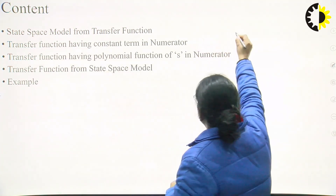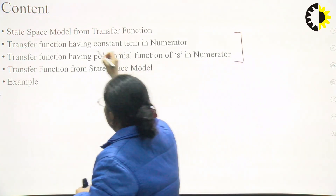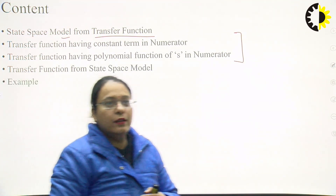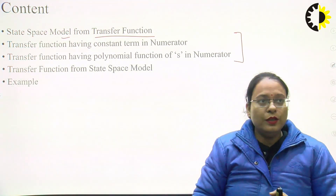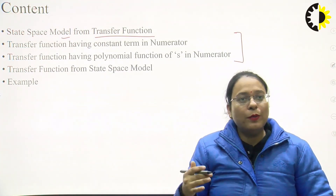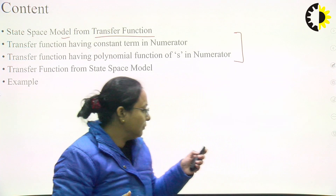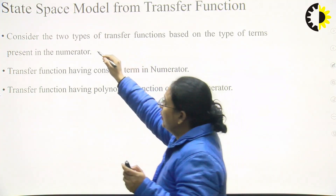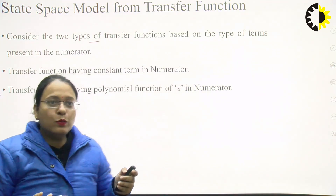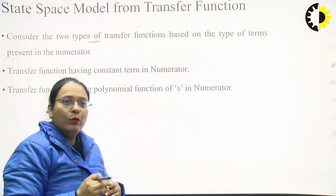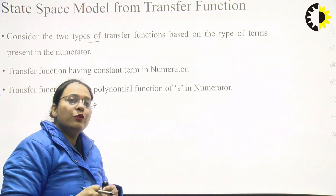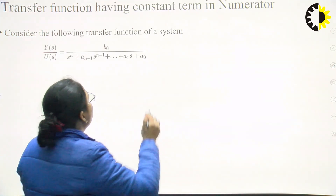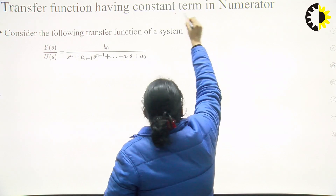There are two ways to get the state space model from the transfer function, and another topic is to get the transfer function from the state space model. I will discuss numericals on both these topics. As I mentioned, there are basically two types of transfer functions: first, one in which the numerator term has only a constant term, and another in which the numerator has a polynomial function of s. I will start with the case where only a constant term is present in the numerator.